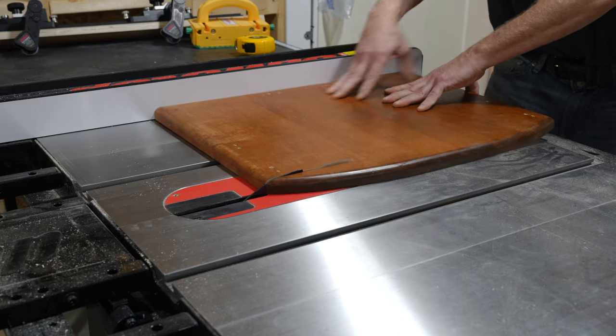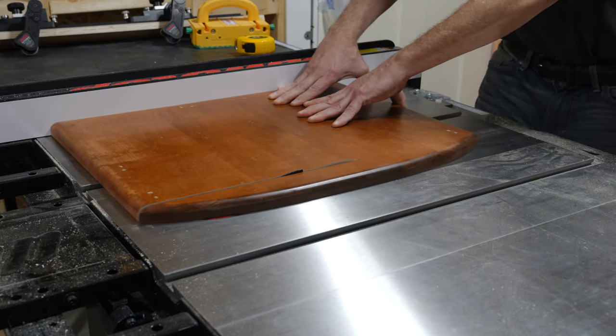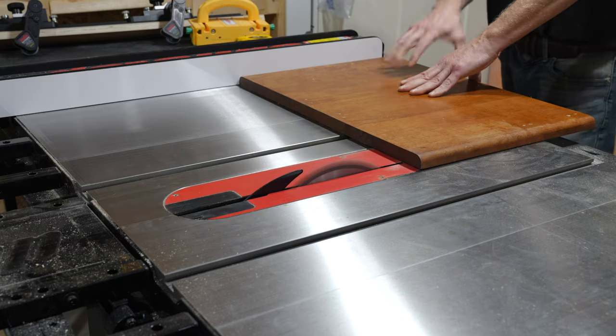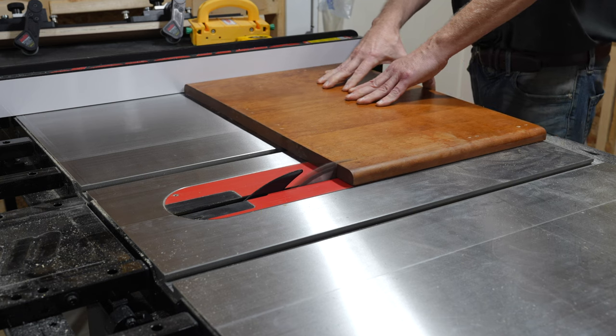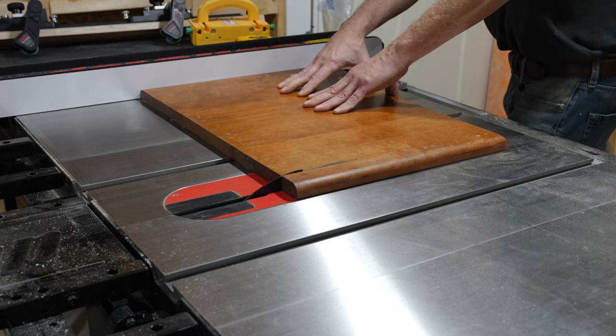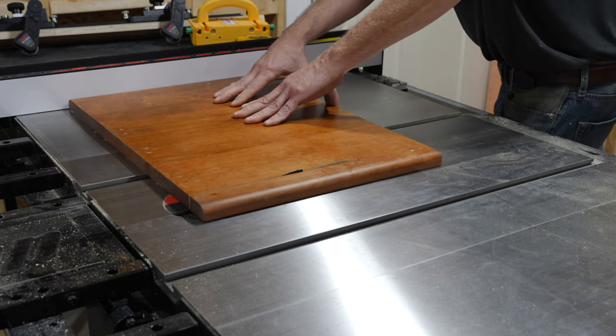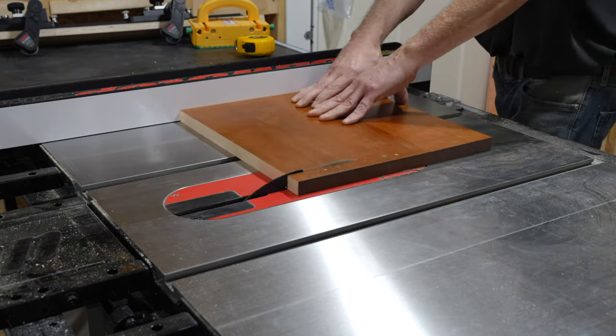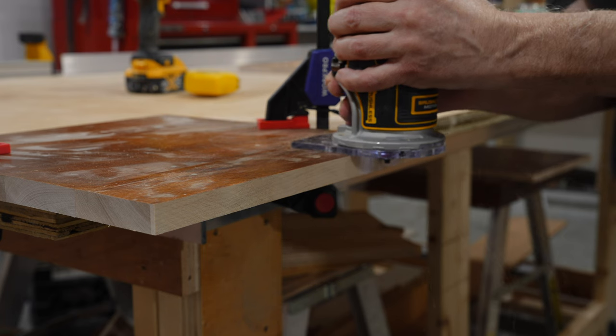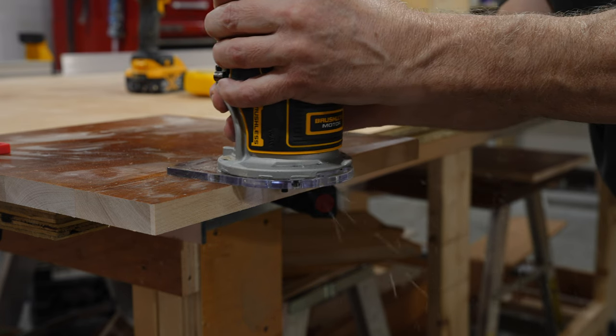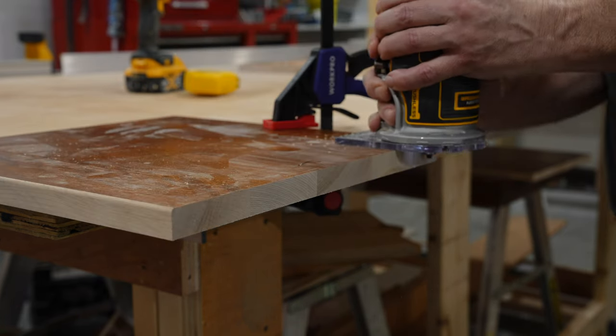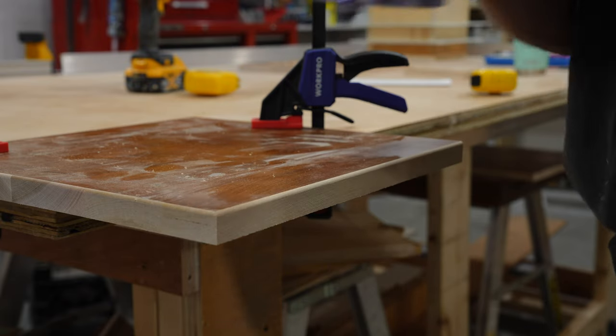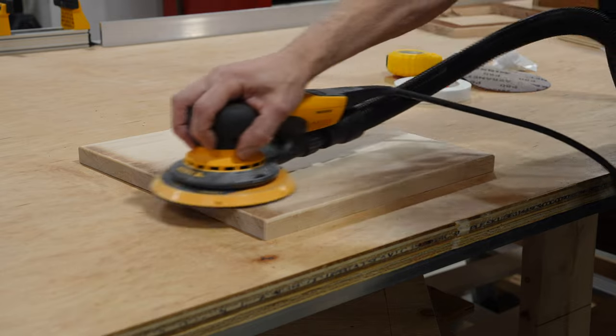Now I will start to work on the trim work to finish off the base. For this, I will be using a combination of maple and cherry. For the bottom of the base, I am using maple, which is from a shelving unit I had. The size will be 13 1/2 inches square. Here, I am routing the edge with an 1/8 inch round-over bit.